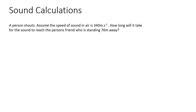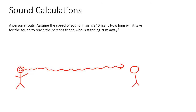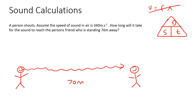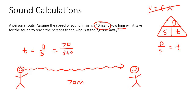In this question, a person shouts. Assume the speed of sound in air is 340 meters per second. How long will it take for the sound to reach the person's friend who is 70 meters away? Here we're going to use the distance, speed, and time formula. Time equals distance over speed, so time equals 70 divided by 340, which gives you 0.21 seconds.